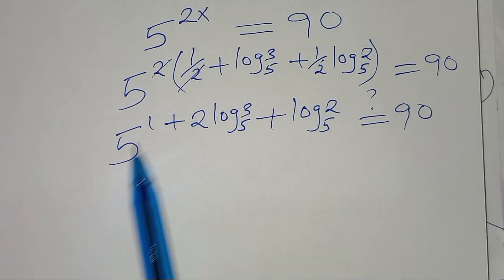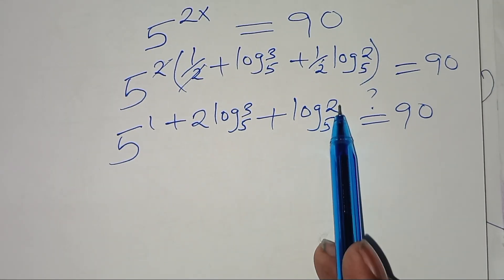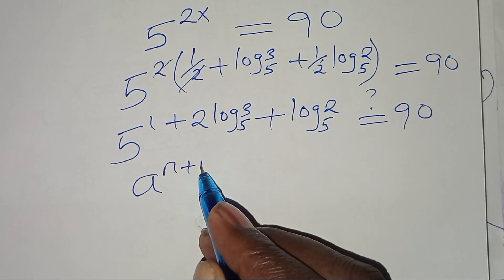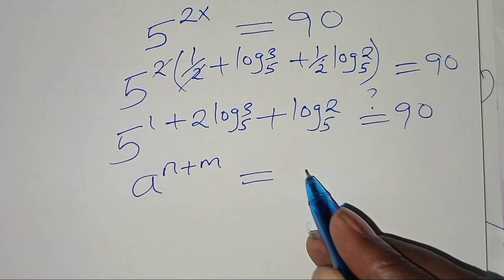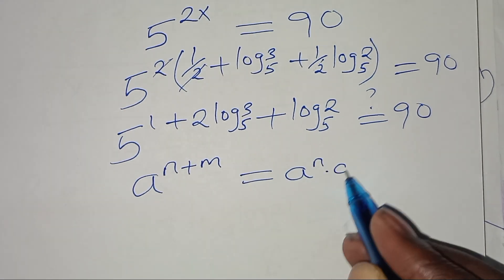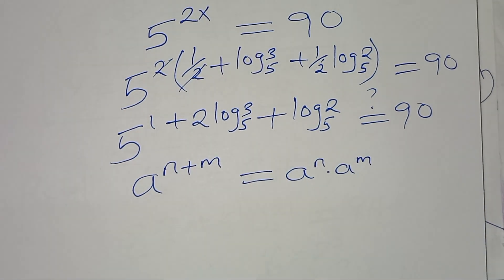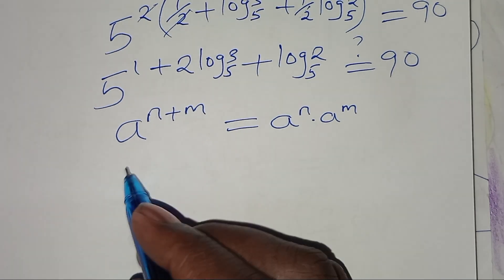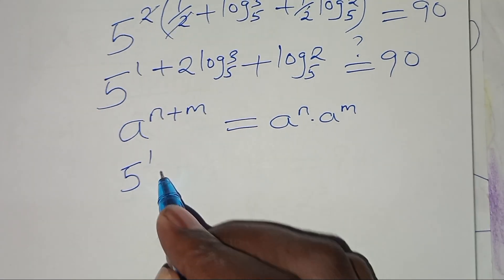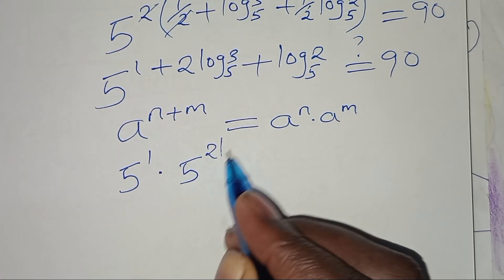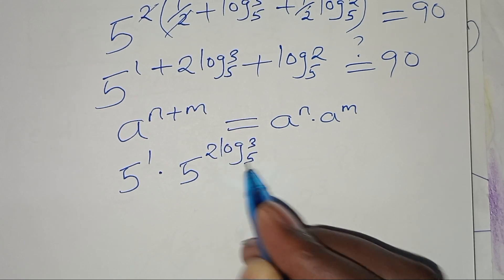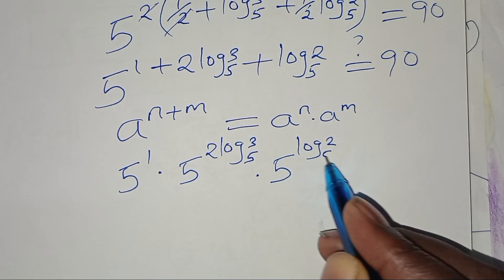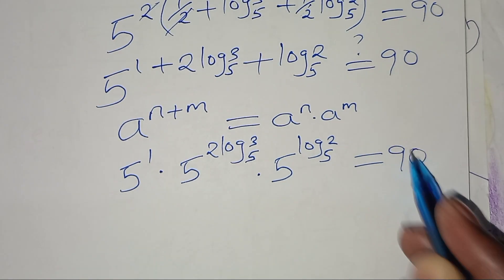So we find that 5 to the power (1 plus 2 log base 5 of 3 plus log base 5 of 2) is in the form of a to the power n plus m, which we can express as a to the power n multiplied by a to the power m. Applying this property, we have 5 to the power 1 times 5 to the power (2 log base 5 of 3) times 5 to the power (log base 5 of 2), and this gives a value of 90.